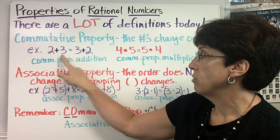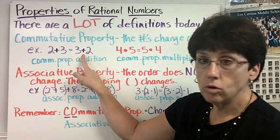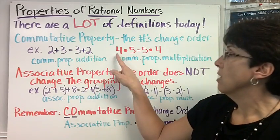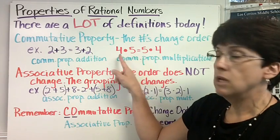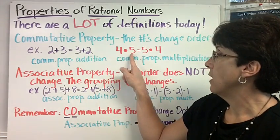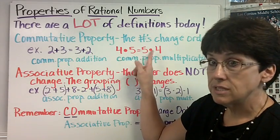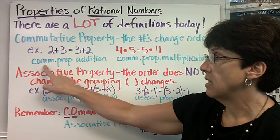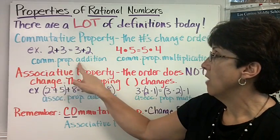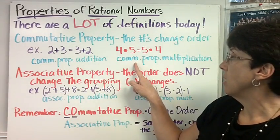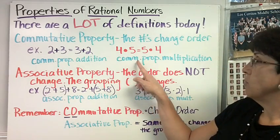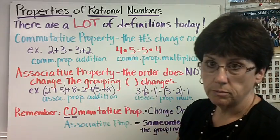2 plus 3 equals 3 plus 2. What are the numbers? 2, 3, 3, 2. The order is different. 4 times 5 equals 5 times 4. Say the numbers: 4, 5, 5, 4. The order is different. This is an example of the commutative property of addition and commutative property of multiplication.